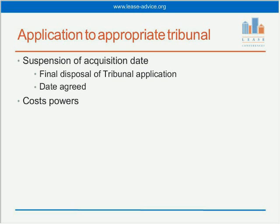If the landlord challenges Right to Manage validity or entitlement, the date is delayed — it might take six or nine months. Sometimes parties can agree: the landlord can say they're no longer resisting, and it's three months from that date of agreement. Although the 2002 Act envisages Right to Manage being acquired within three months of the date set out in the claim notice — four months in total because the landlord has a month to respond with a counter notice — that date can be suspended if a landlord resists by making an application to the tribunal.